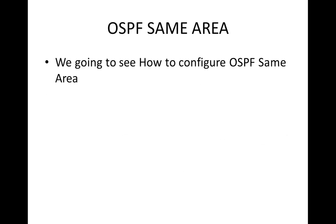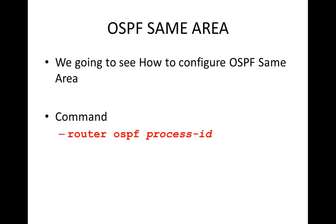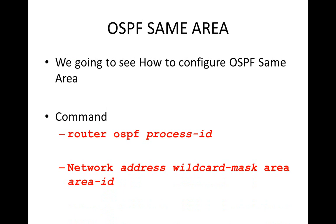The command we need to know for OSPF same area is: router ospf [process ID]. The process ID is just a value to differentiate Router 1, Router 2, or Router 3 — just put a number. The second part is the network address, for example 10.0.0.0, followed by the wildcard mask, then followed by the area. Then the area ID — which area is it, area 0 or area 1? This is the concept.